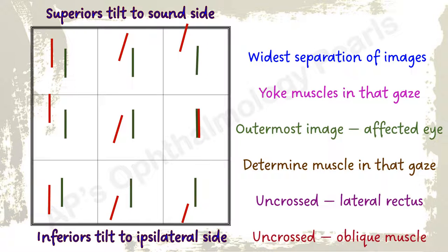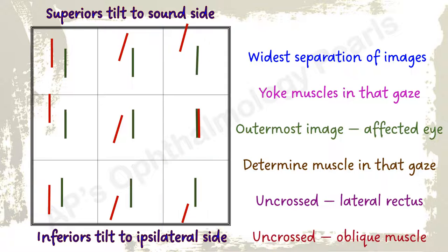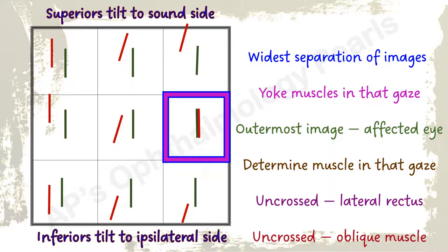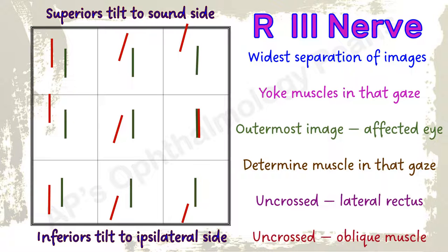Here we see something different. There is a vertical separation of images in both dextro elevation and dextro depression, suggesting involvement of two different muscles — a right superior rectus palsy and a right inferior rectus palsy. Dextroversion is intact, suggesting normal right lateral rectus action. Crossed diplopia in the left fields of gaze suggests a right medial rectus palsy. This complex of multiple muscle involvement is consistent with a right oculomotor palsy. In an oculomotor palsy, there is always crossed diplopia and the false image tilts towards the ipsilateral side.